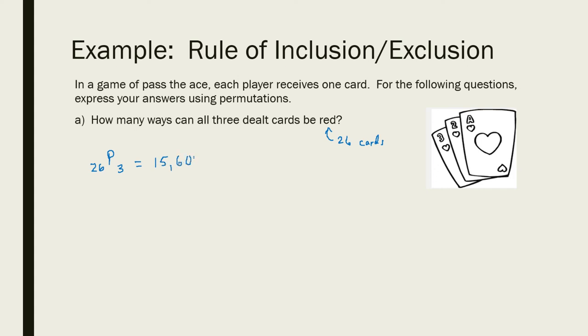See if you can write the next one as a permutation. How many ways could all three players be dealt face cards? Remember there are 12 face cards in a deck: four Jacks, four Queens and four Kings. So in this case, from those 12 face cards, we are arranging three of them: 12P3. And that's 1,320 different ways that all three players could get face cards. Not as many as previous question because there's only 12 face cards, less options.